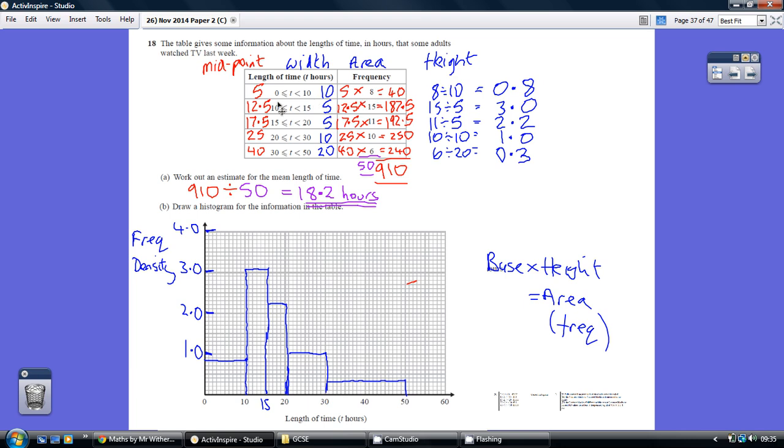Now, we don't know how long they actually watched it for, so we have to take the midpoint. That's the best we can do. Halfway between 0 and 10 is 5, halfway between 10 and 15 is 12.5, and so on - all these red numbers here. From then onwards, we're just estimating.